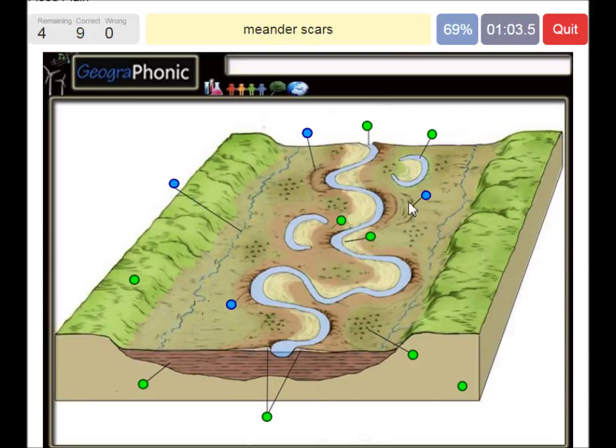These are old meander scars. An undercut bank. That's what we see here. And this erosion here. And on this side at the point bar there's the sediments. A deep meander scar, as far as what we see here.